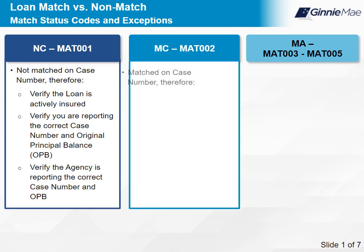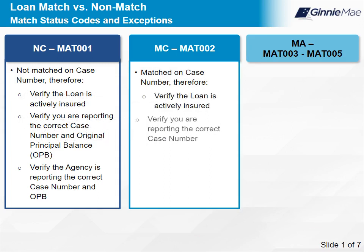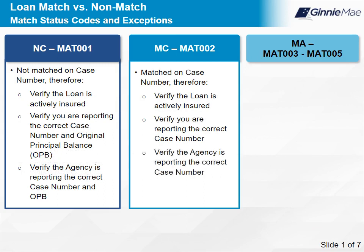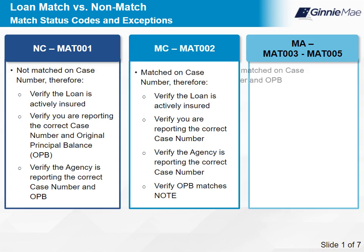Match Status Code MC is connected to exception alert MAT002 — it is matched on case number only. Verify the loan is actively insured. Verify you are reporting the correct case number. Verify the agency is reporting the correct case number. Then verify OPB matches; if not, have it corrected. Match Status Codes MA are connected to exception alerts MAT003 to MAT005. MA indicates the loan is matched on case number and OPB.